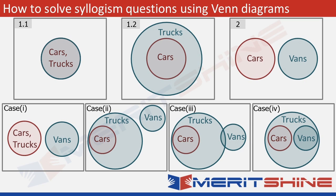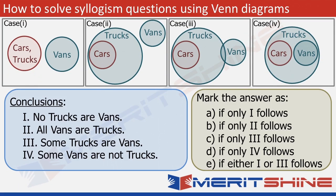Once we have these four cases, we don't need figures 1.1, 1.2, and 2 anymore. Let's bring back the conclusions. Conclusion 1: No trucks are vans. This is possible in some cases, but it is violated in cases 3 and 4, where there is an overlap between trucks and vans. A conclusion follows only if it holds in all cases. So conclusion 1 does not follow.